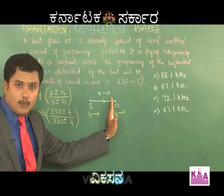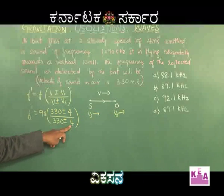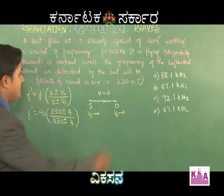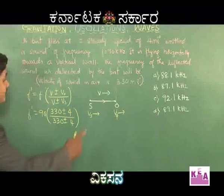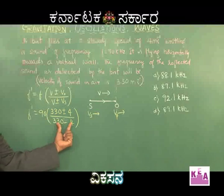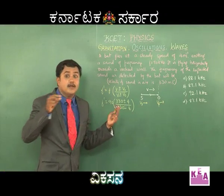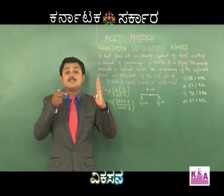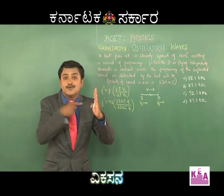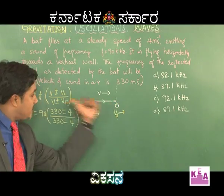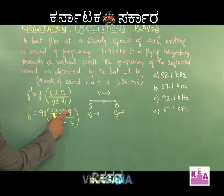In this problem, the source — the bat — is moving towards the wall, which is along the assigned direction. Therefore V_S should be negative. For the observer side: the observer is also the bat, but when receiving the reflected sound, the wall acts as the source and the bat is the observer moving towards it — opposite to the assigned direction. Therefore V_O should be positive. So the expression becomes F' = 90 × (330 + 4) / (330 − 4).